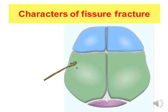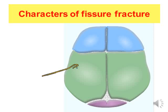If the person is hit again, a new point of impact creates another fissure fracture which stops at the first one. The last character is that fissure fracture can occur alone or associated with other types of fractures. Pictures demonstrate fissure fractures in bones.